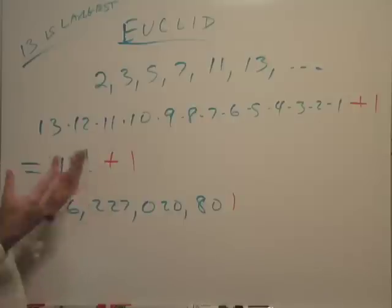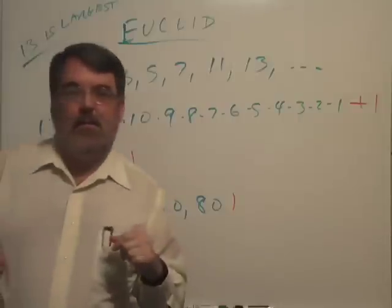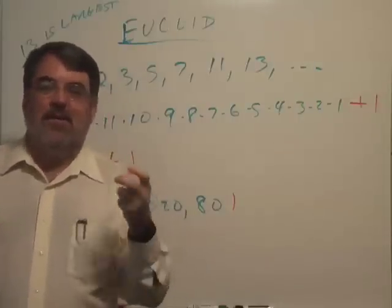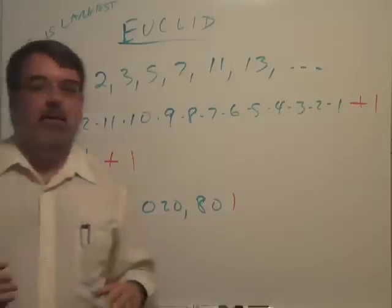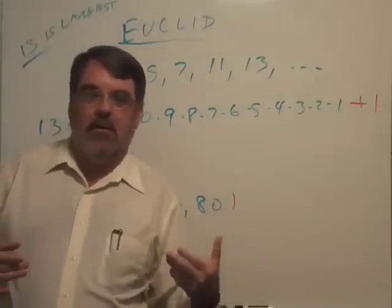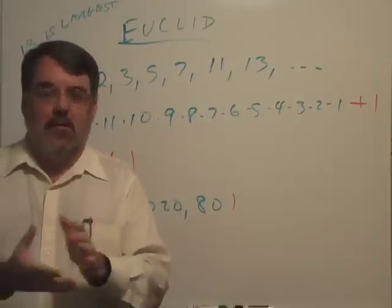Now, a mathematician and Euclid would be more general about this. We would say, well, suppose that number p, for example, p for prime, suppose p is the largest prime number. Then if you look at p factorial plus one, we can make this similar argument that there must be a larger prime number than this so-called largest one.